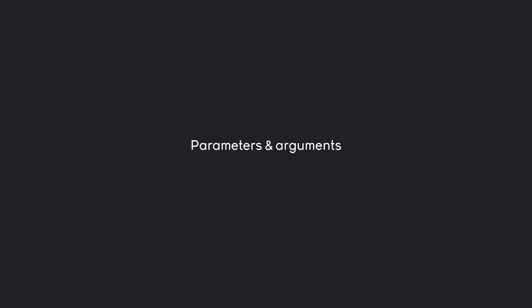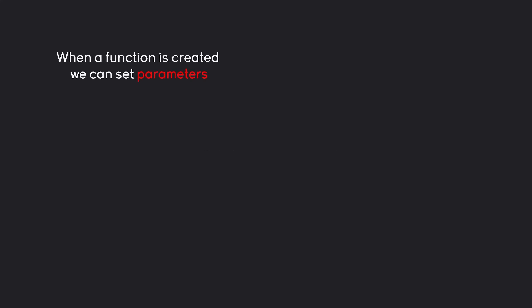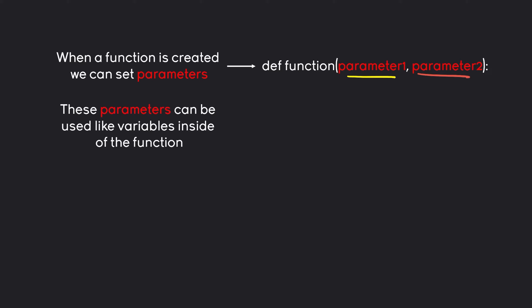Let's talk about parameters and arguments. Let's do a quick recap because it's really important to understand these names. When we are creating a function we are setting some parameters. For this function we are creating parameter 1 and parameter 2. These parameters we can use like variables inside of the function. For example, inside of the function we could print parameter 1 and parameter 2. These parameters only exist inside of the function.